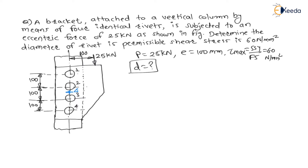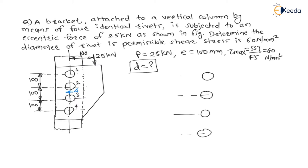Let us consider these rivets. If I consider rivet number 1, then rivet number 2, rivet number 3, and rivet number 4. All rivets are identical, meaning having the same size. The distance between all the rivets is given as 100 mm, and the centroid will be at this location. This is 1, 2, 3, 4.